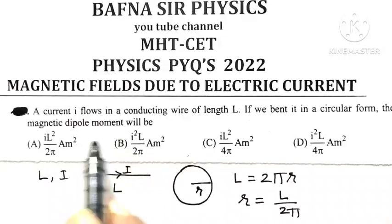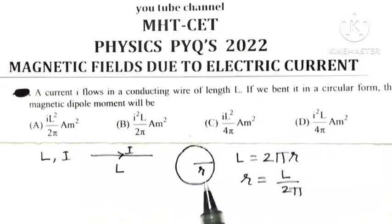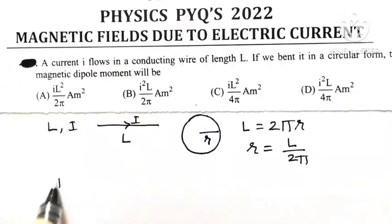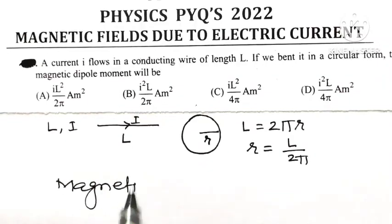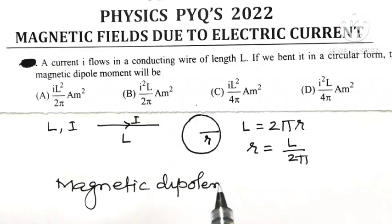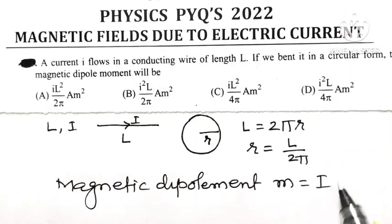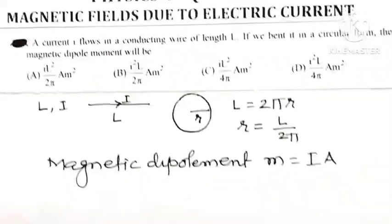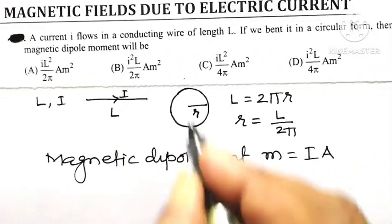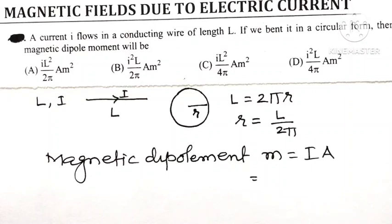Then its magnetic dipole moment will be. Now as far as the magnetic dipole moment is concerned, magnetic dipole moment of any current carrying coil, M is equal to I into A. Here what is A? A is the cross-sectional area, or the area of circular loop.